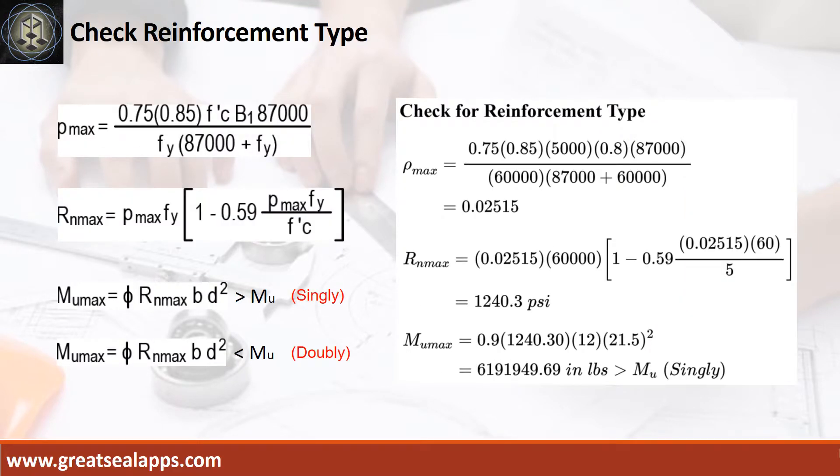The rho max from the given design criteria is 0.02515. Then the maximum concrete beam design ratio RN max equals 1,240.3 PSI. Followed by maximum moment from given section MU max equals 6,191,949.69 inch pounds, which is greater than the maximum design moment.